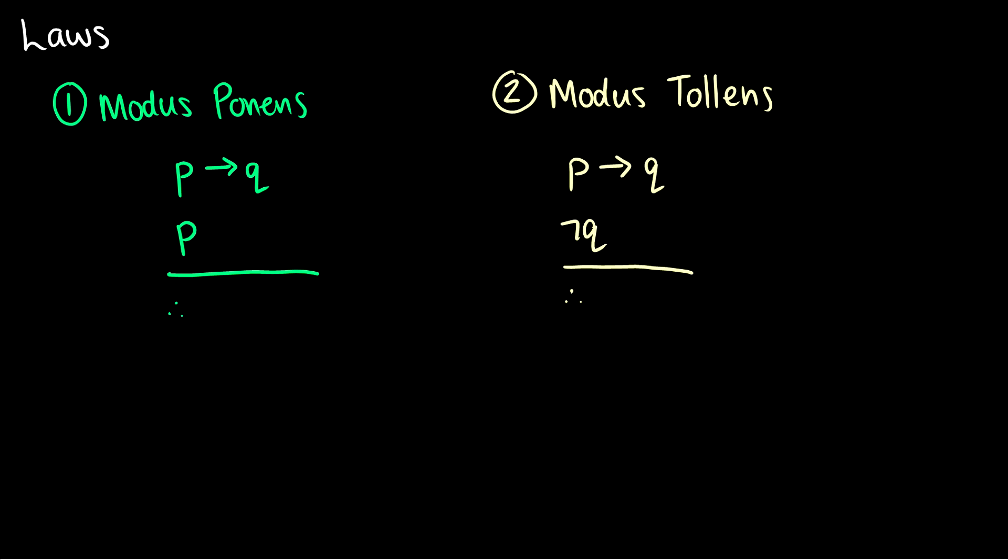So first one is modus ponens. And this is sometimes referred to as affirming the antecedent. So if I have P arrow Q, and I have P, then I have Q. This is like sticking the thing into the arrow and getting an output. Modus ponens, this is normally shortened as MPP. MPP because this is actually modus ponendo ponens, but we just take the ponendo out. Because, you know, we're discrete math people, we're not philosophers.